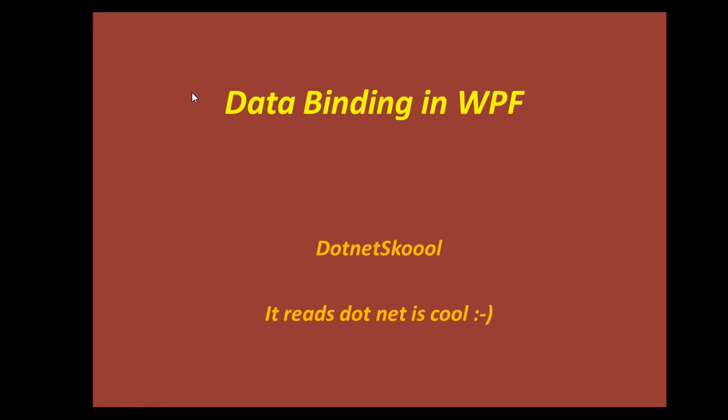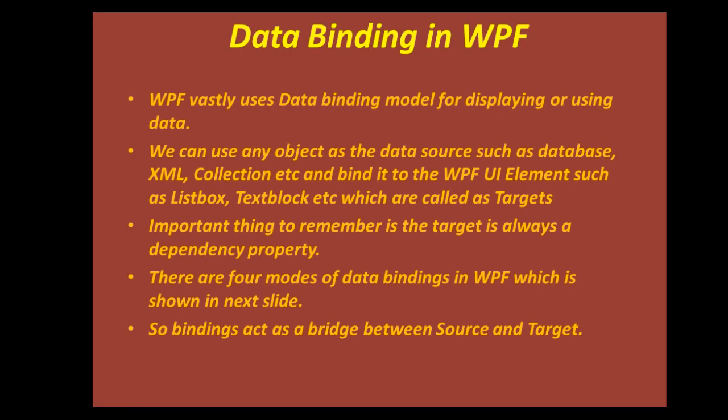In this example I will be using a simple slider control and a text box control, and I will bind the property of that slider into that text box. Let's jump into the slides first and understand what is data binding in WPF. WPF vastly uses a data binding model for displaying or using data. Any form of data which needs to be displayed on screen is displayed with the help of data binding. So you can say that if there is a database and from that database we need to display data on screen, we use data binding. The data from where the data is coming is called the source.